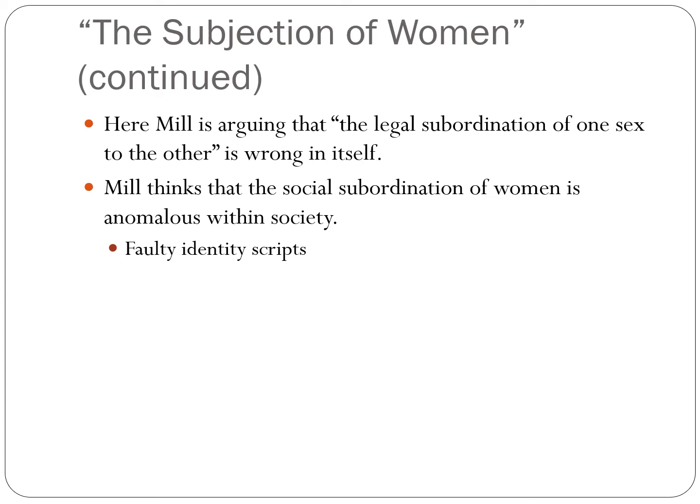Mill thinks that the social subordination of women is anomalous within society. It's based on faulty identity scripts, and there's no scientific evidence to back it up. Going back in history, we see that the subordination of one sex to the other is more of a social construct than anything else — it's certainly not based on scientific evidence. It's basically the way things are done through tradition, and it becomes very difficult for women to break out of.